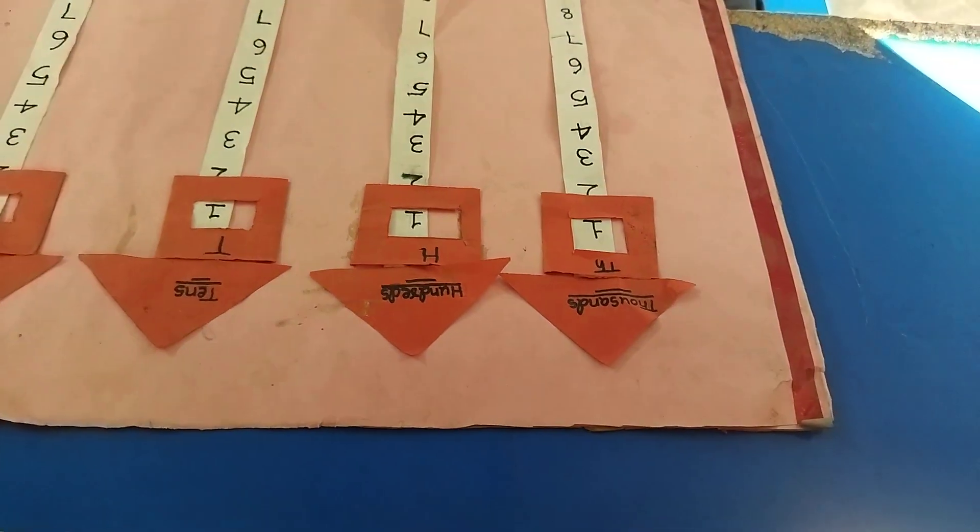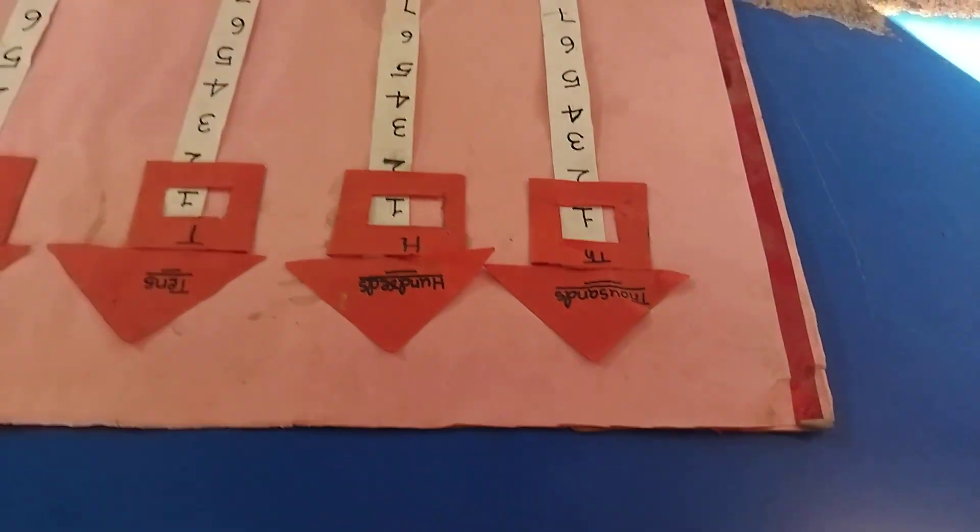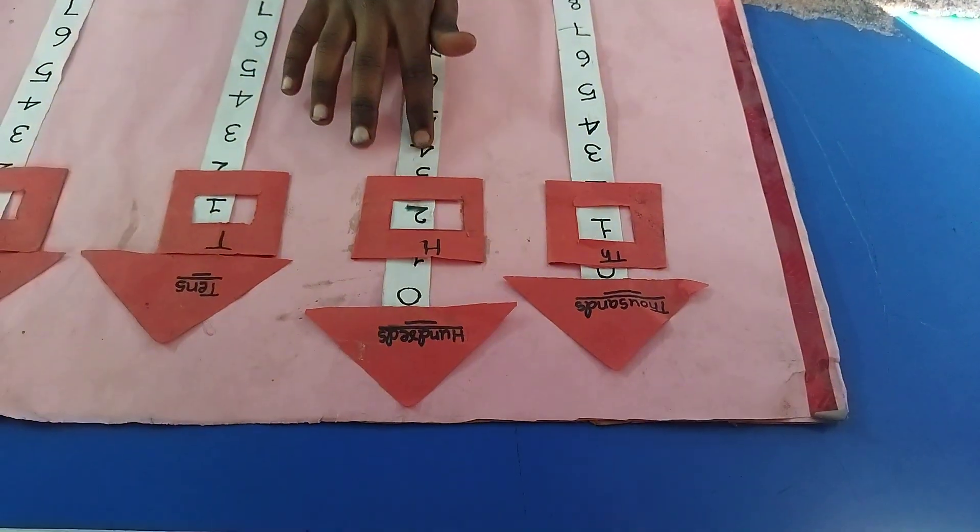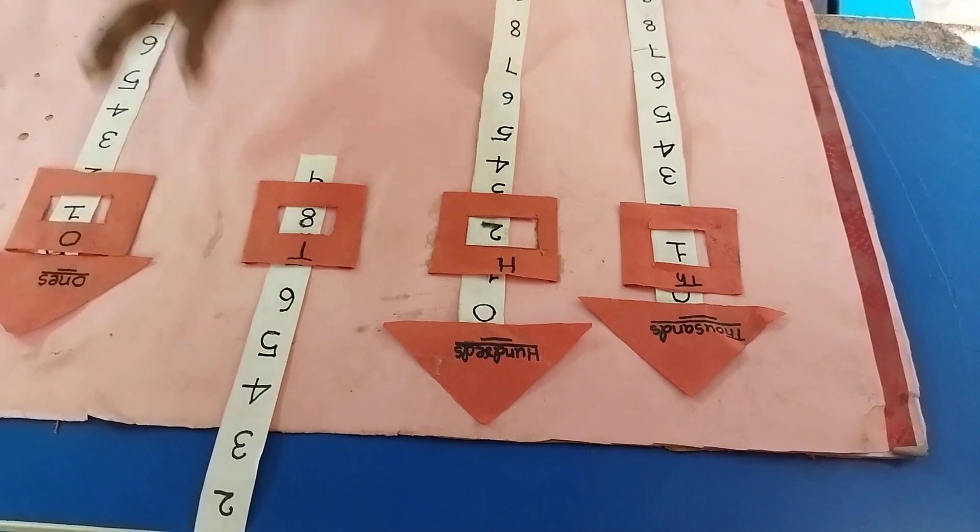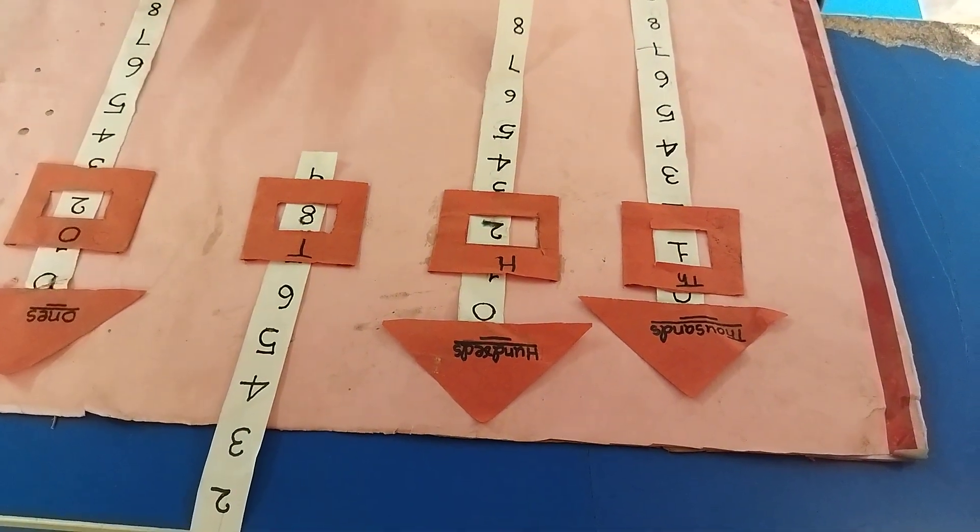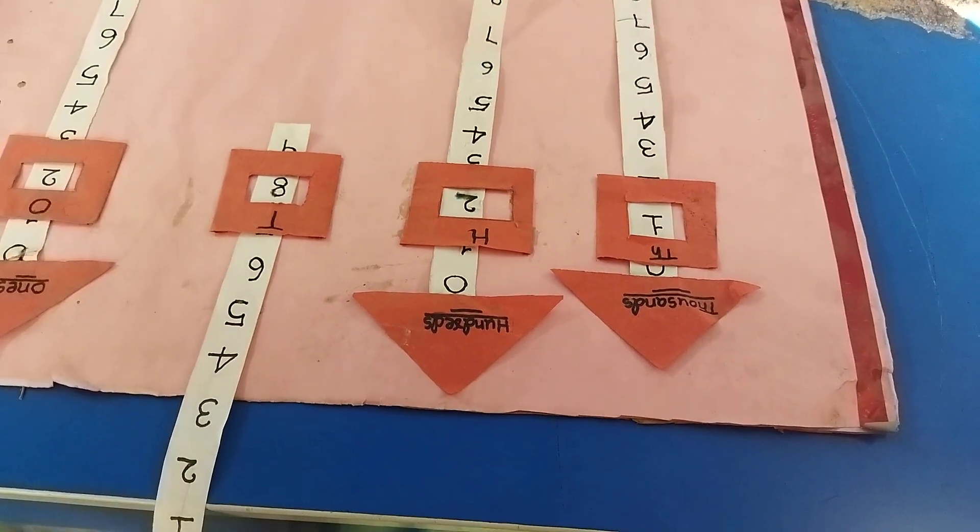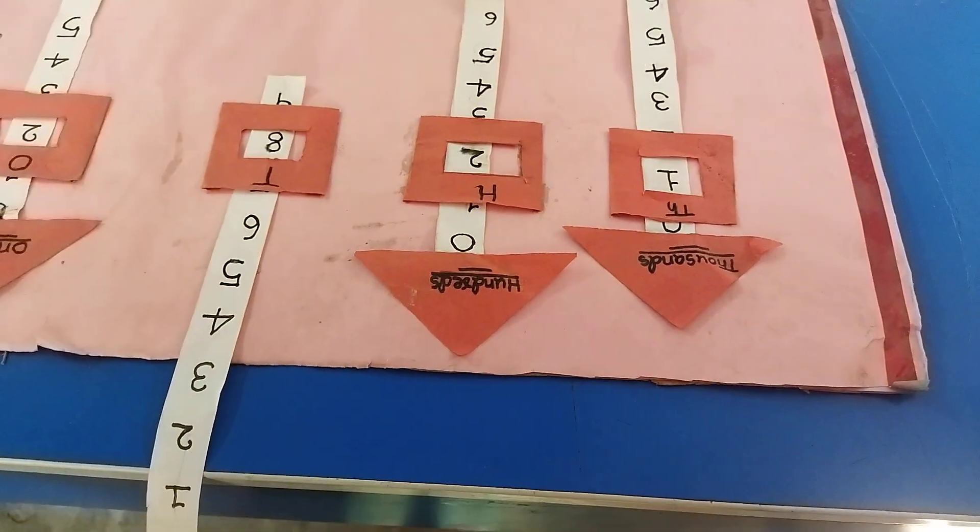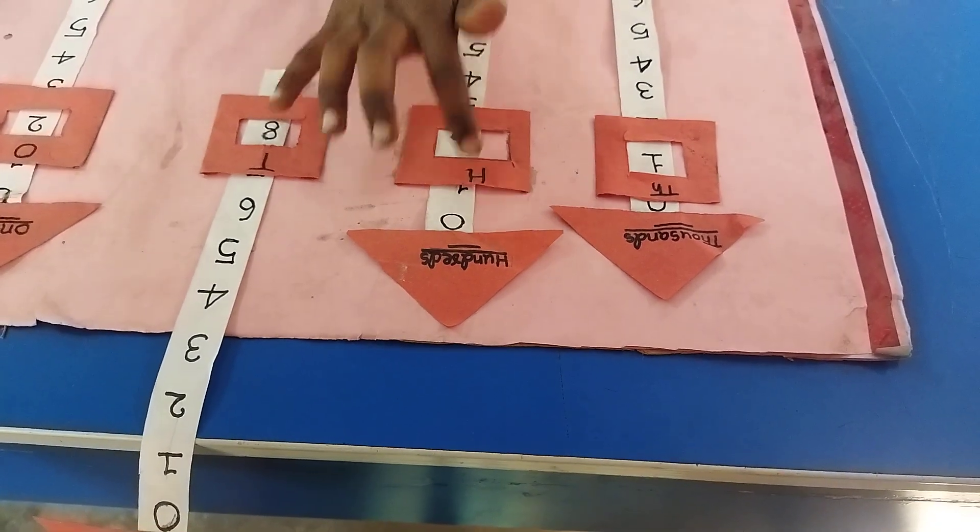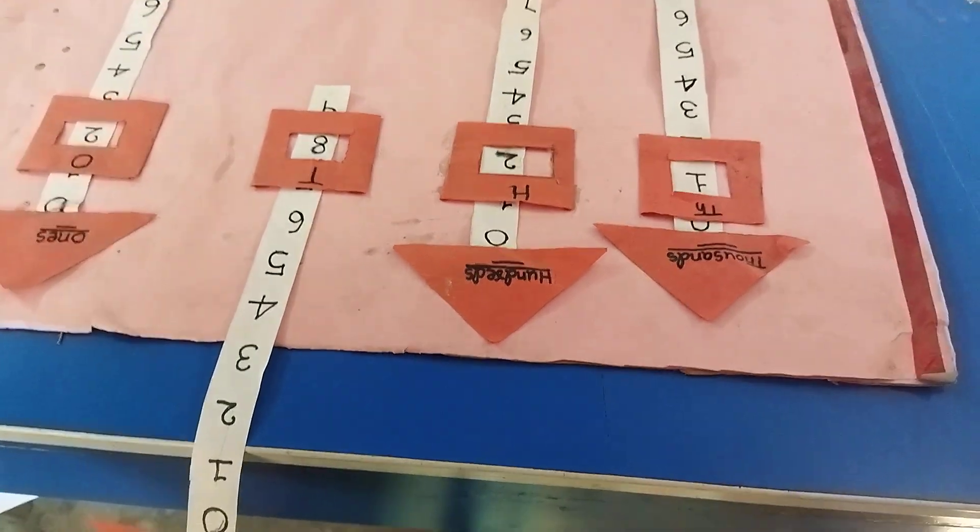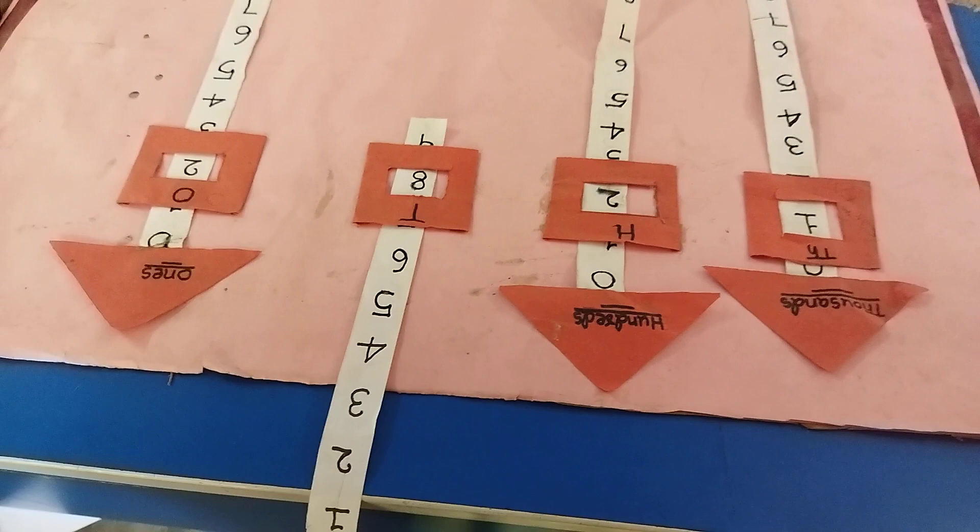1,282. One thousand, two hundred and eighty two. Place value. Two ones, eight tens, two hundreds, one thousand. Okay, right.